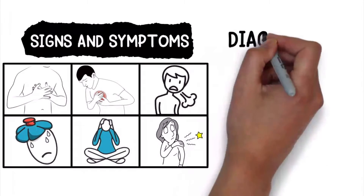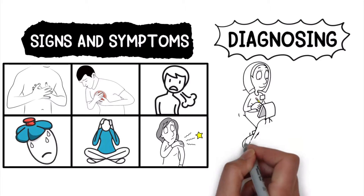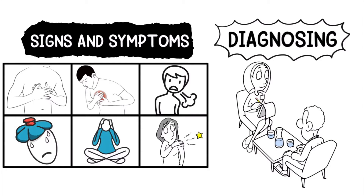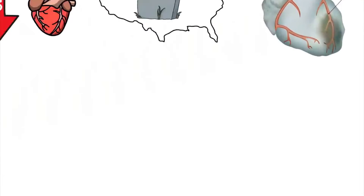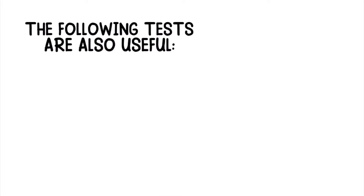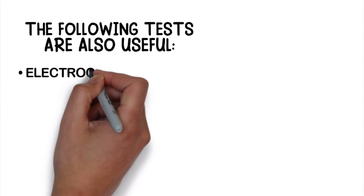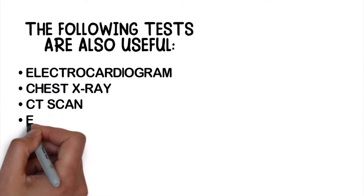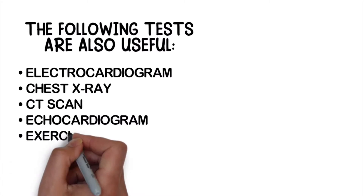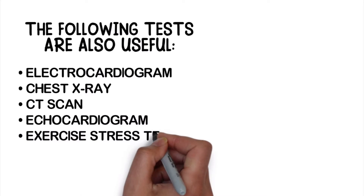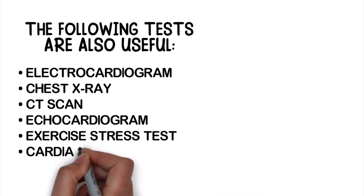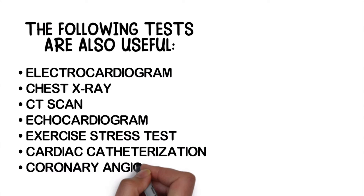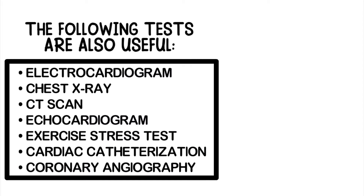Diagnosing a patient with coronary artery disease includes a physical exam and looking at their lifestyle and medical history. The following tests are also useful: electrocardiogram, chest x-ray, CT scan, echocardiogram, exercise stress test, cardiac catheterization, and coronary angiography.